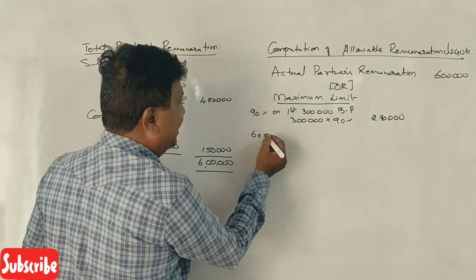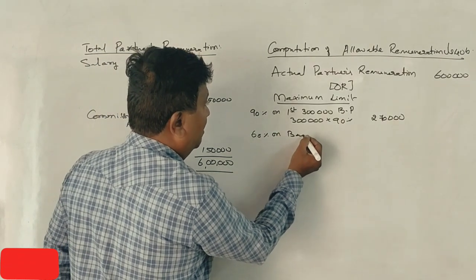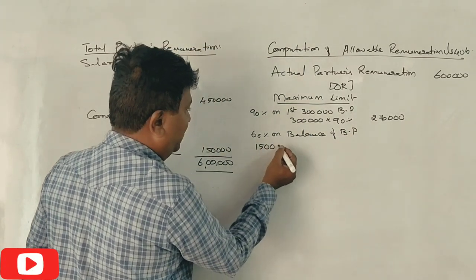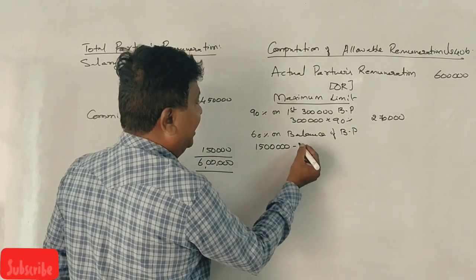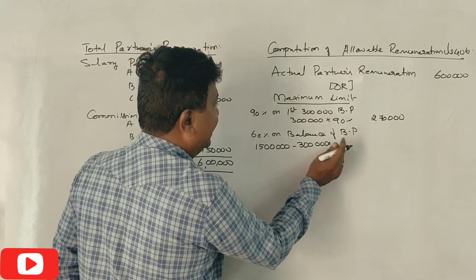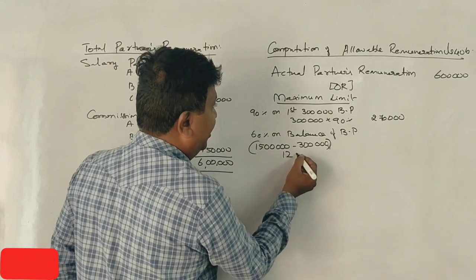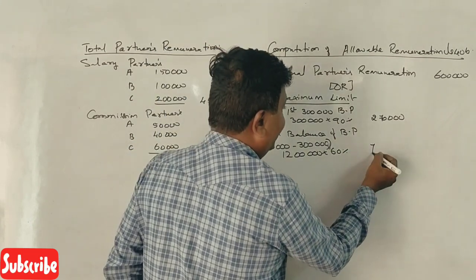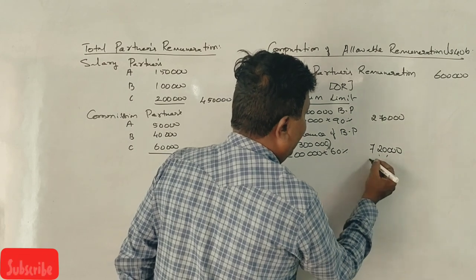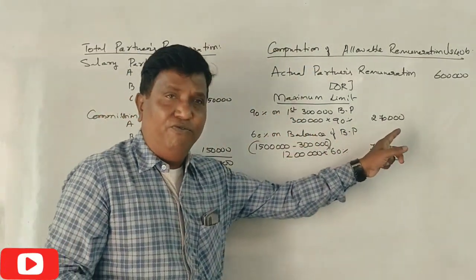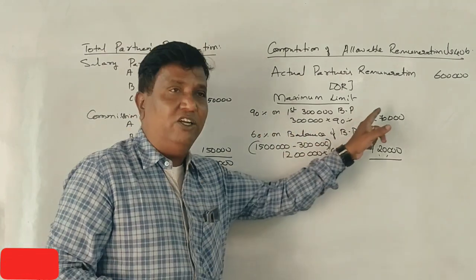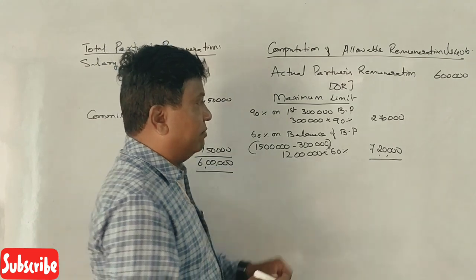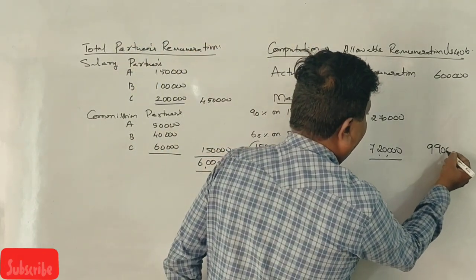Now 60% on balance book profit. 12 lakh rupees remaining, 60% is 7,20,000 rupees. That is 90% on first 3 lakhs and 60% on the balance of book profit. Total now 9,90,000 rupees.